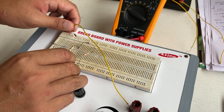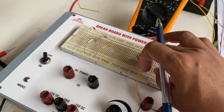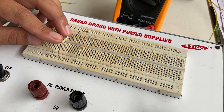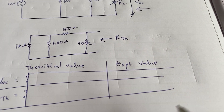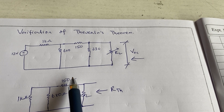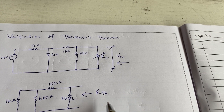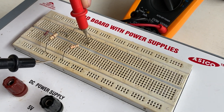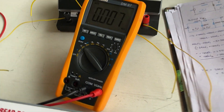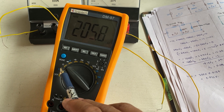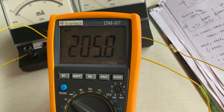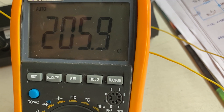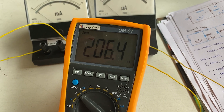To measure RTH, we have to short circuit the voltage source, which means we are not connecting the voltage source and are rearranging the circuit. We have 1kΩ, 680Ω, 150Ω, and 330Ω. To measure RTH we measure across the 330Ω terminal. On the digital multimeter, the pointer is set to ohms, and it is giving 502.8 ohms. That concludes the verification of Thevenin's theorem.